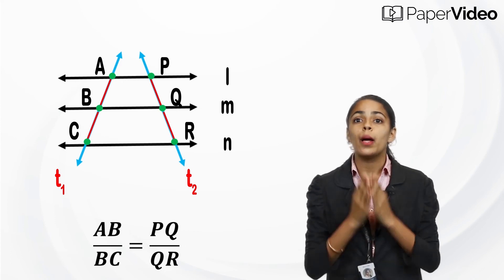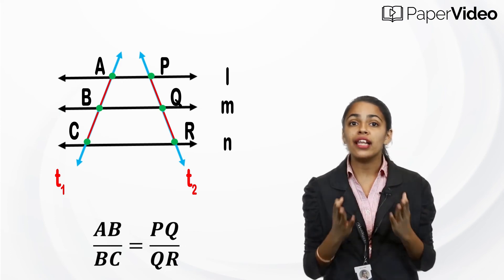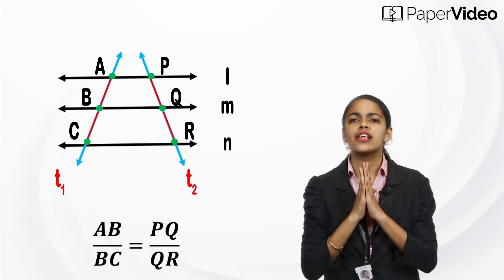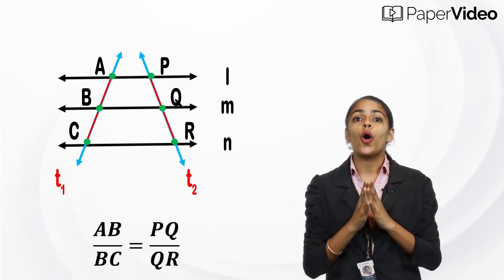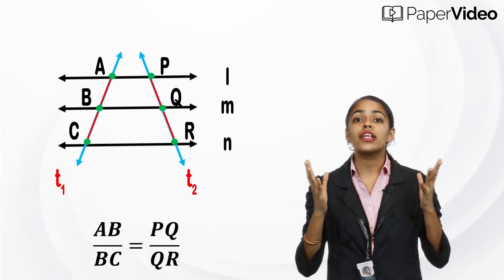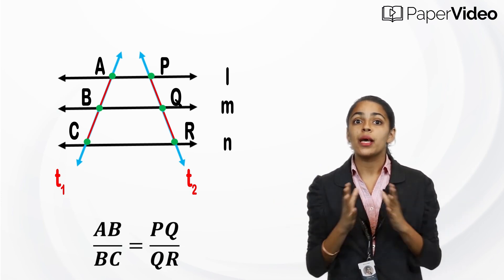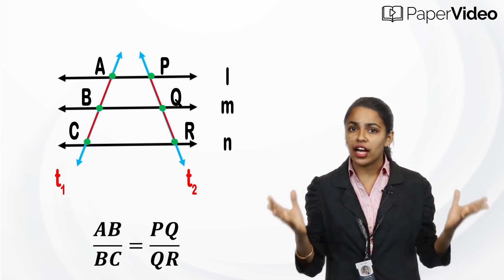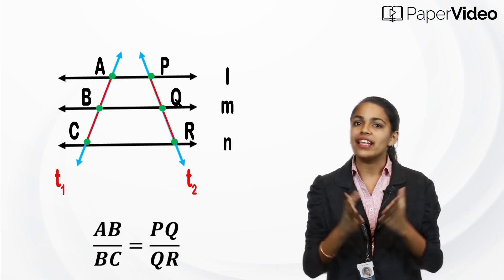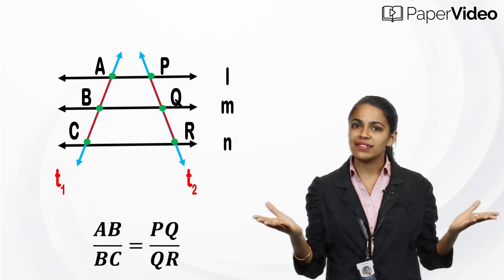is equal to the ratio of the corresponding intercepts made on any other transversal by the same parallel lines.